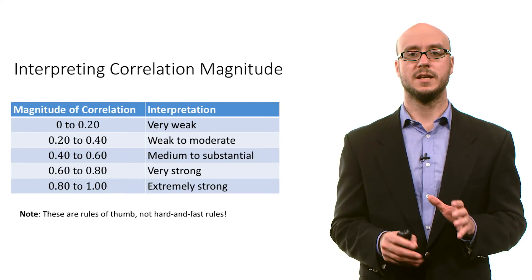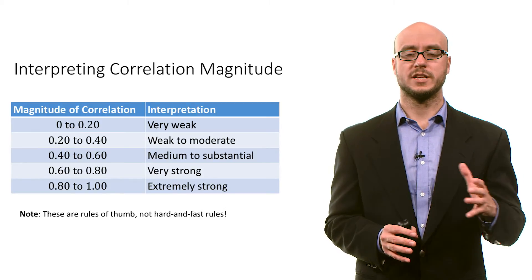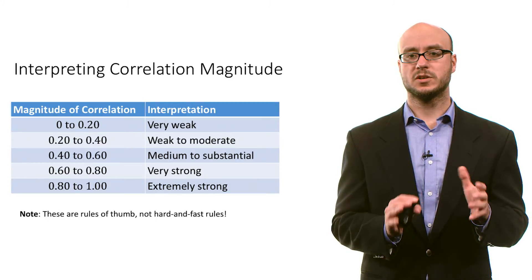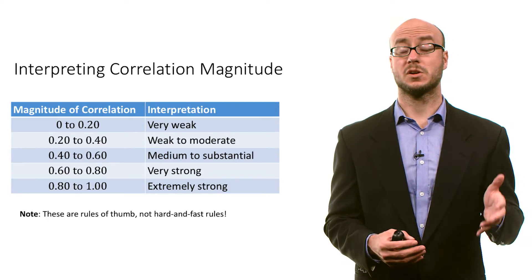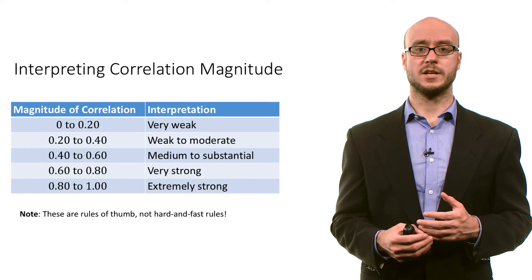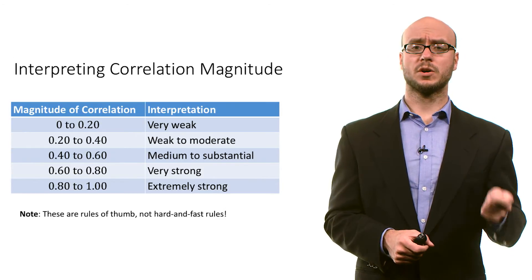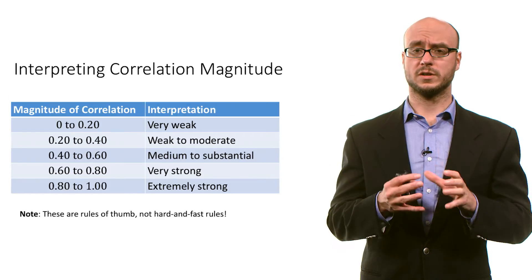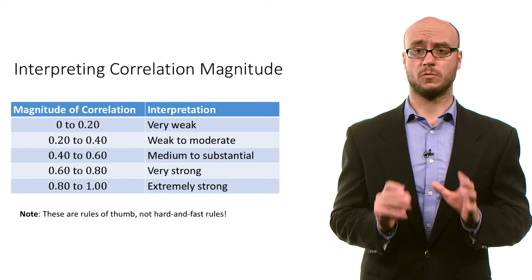In general, a very weak relationship is when the correlation has a magnitude of 0 to 0.2. If it's between 0.2 and 0.4, it's weak to moderate. Between 0.4 and 0.6, it's medium to substantial. Between 0.6 and 0.8 is very strong, and 0.8 to 1 is extremely strong. Correlations in practice close to 1 are really quite rare.